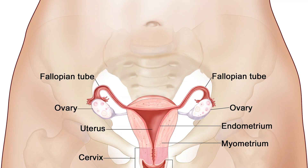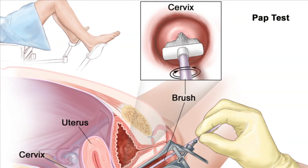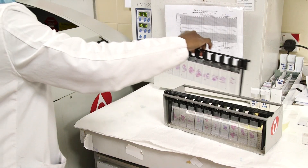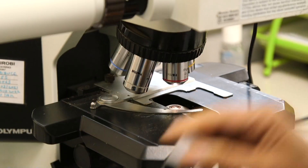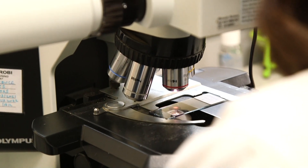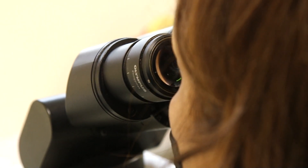Another thing we do is screen pap smears. The pap test eventually ends up as a slide on the desk of a pathologist, who looks at every individual cell to see whether there's a possibility that some of those cells have become abnormal or not. Nearly every system has specific questions that doctors can ask for us to give them answers on.